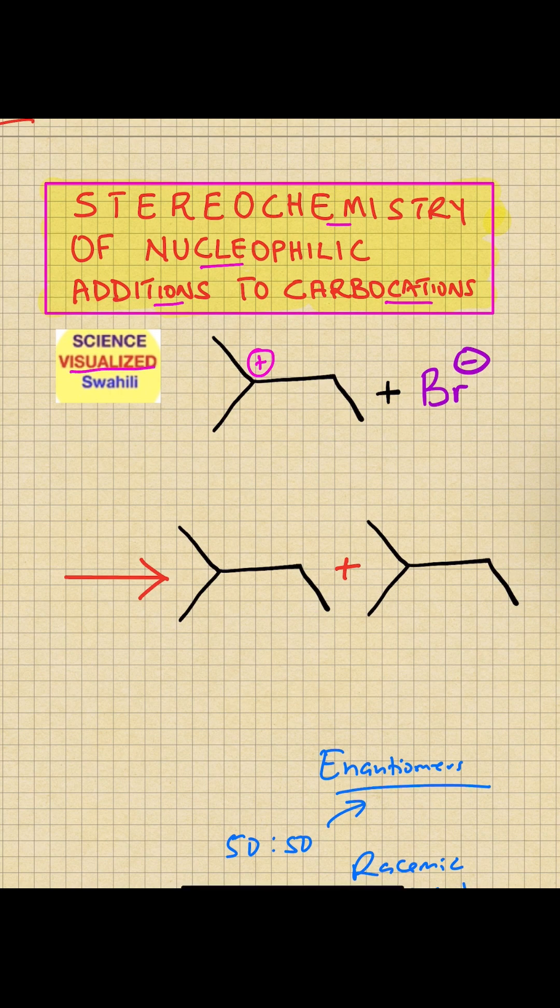If you look at this structure, you see that this carbon here has a positive charge and therefore it's called a carbocation, C+. And on this side we have a bromide nucleophile. So this is a nucleophile and the carbocation is an electrophile.